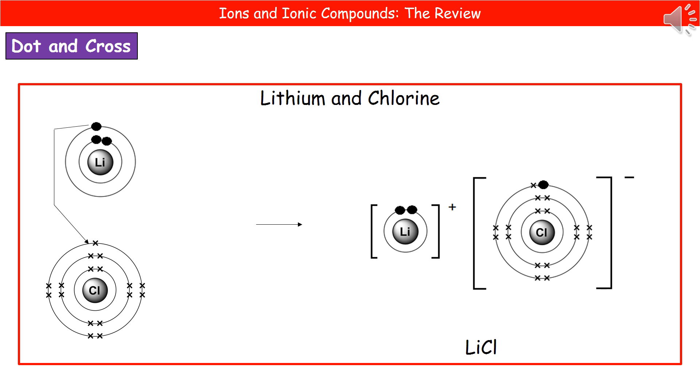Then we can draw our chlorine, which has again got its 17 crosses. Plus, we add that one dot to the outer shell because that's the electron that came from lithium. So it's got to be the same as the other lithium electrons. Put it in square brackets. And this time, because we've gained an electron, it's got a single negative charge. Hence the little minus in the top right.